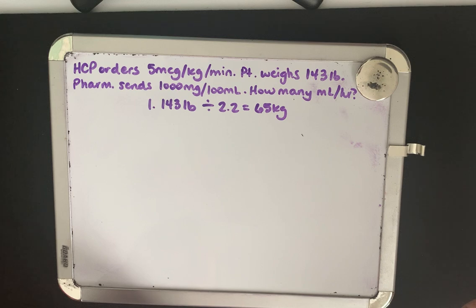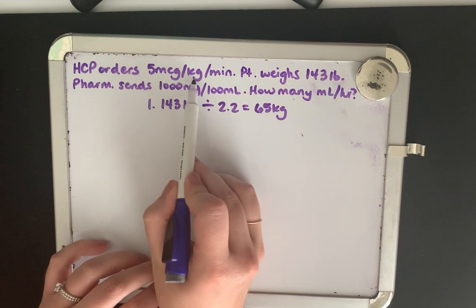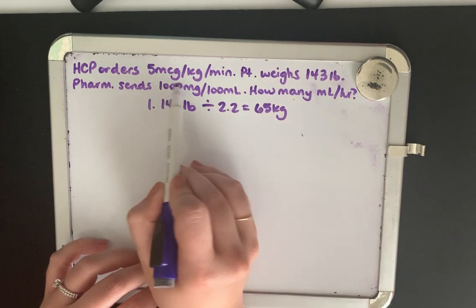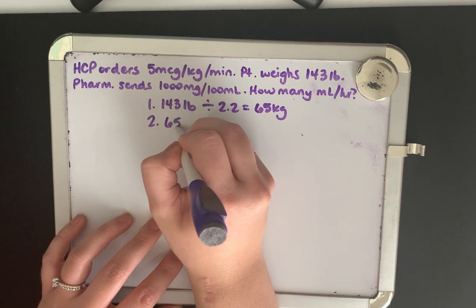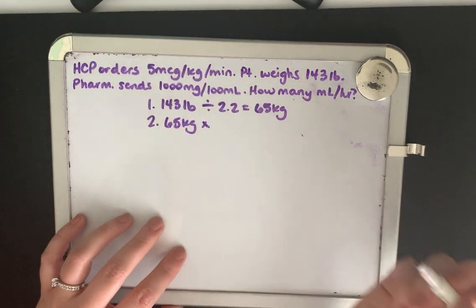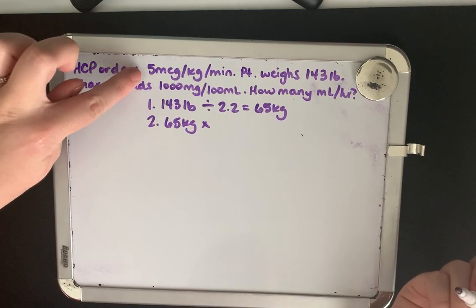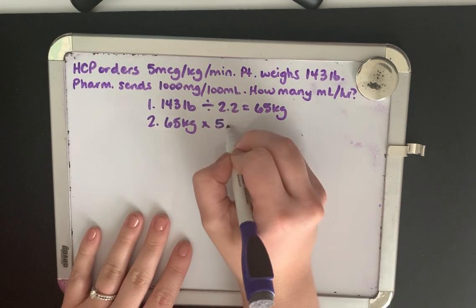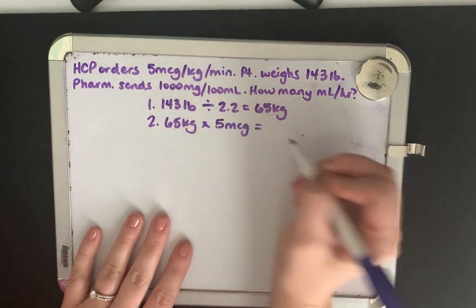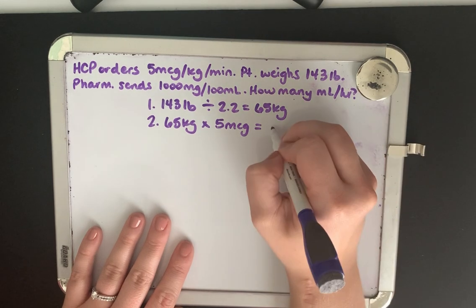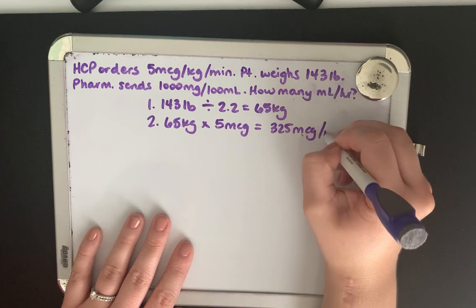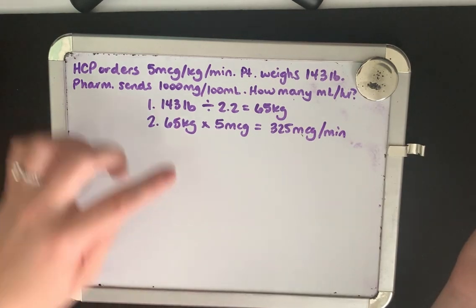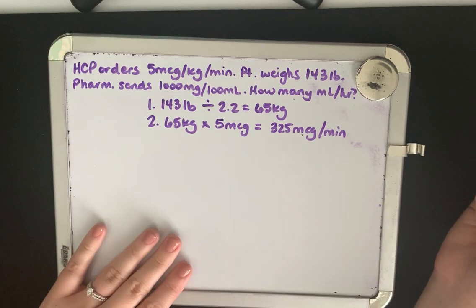Okay, our second step, much like our last problem, is our dosage is going to be five micrograms for every kilogram. So let's figure out what dosage we're aiming for. So we take our patient's weight, 65 kilograms, multiplied times five micrograms. This equals 325 micrograms and in this case this is per minute, right? Because our order is for every minute, not every hour.